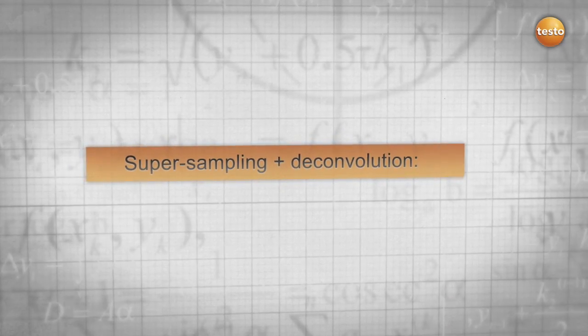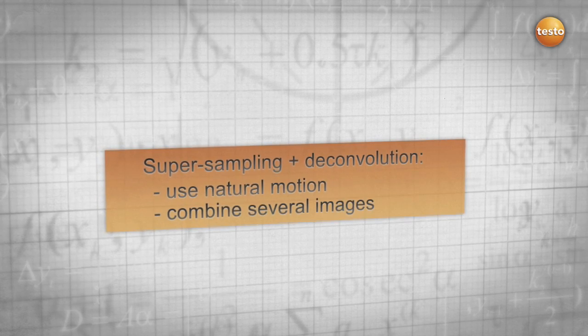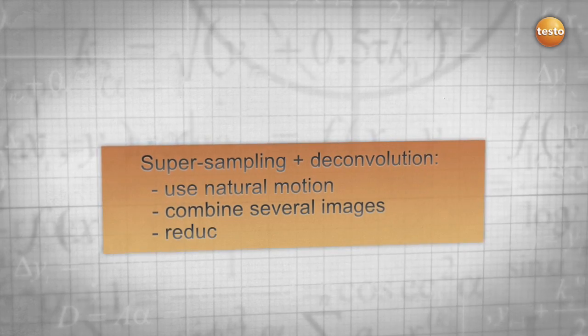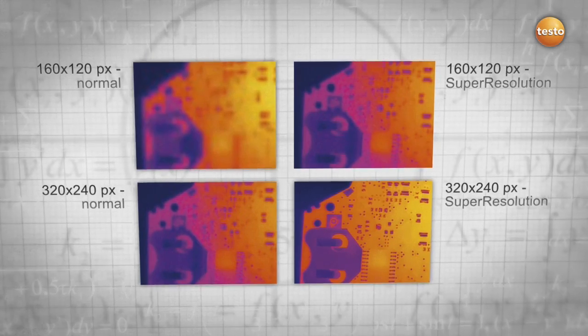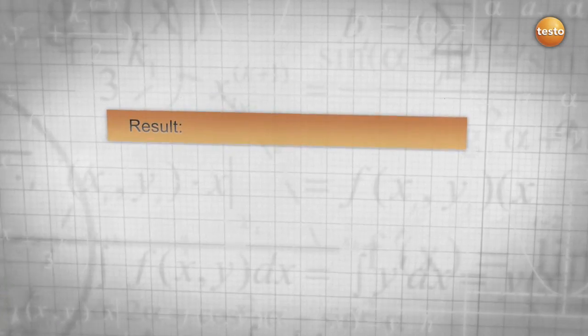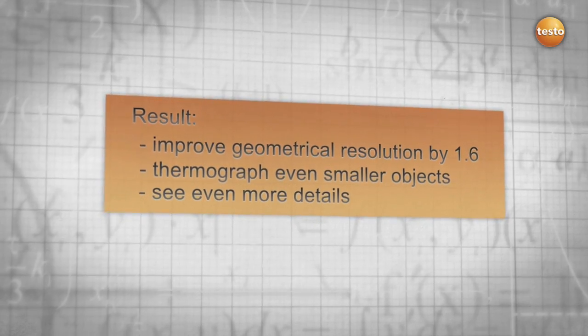The conclusion: with the aid of the natural movement of the hand, Super Resolution combines all advantages of super sampling and deconvolution into a new and revolutionary technology. As a result, Super Resolution improves your resolution and allows you to thermograph even smaller objects and see more details.